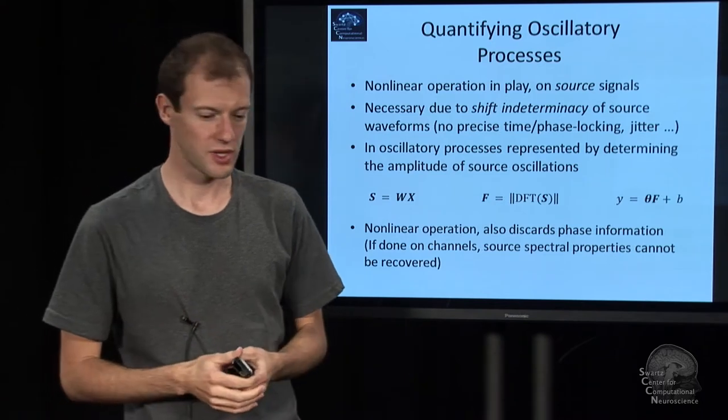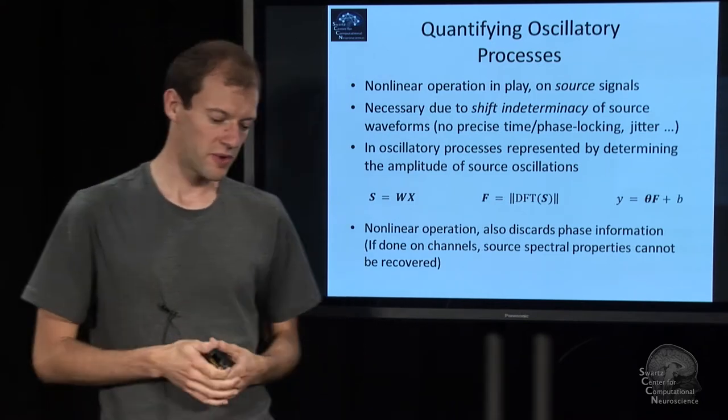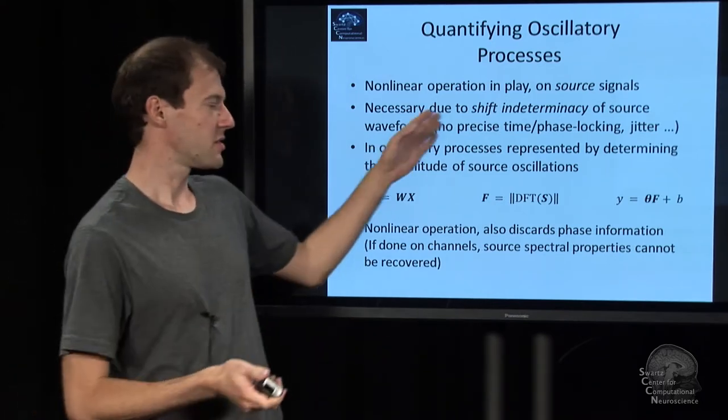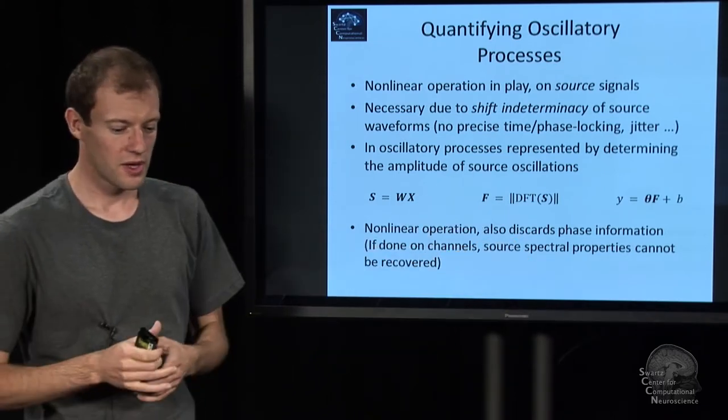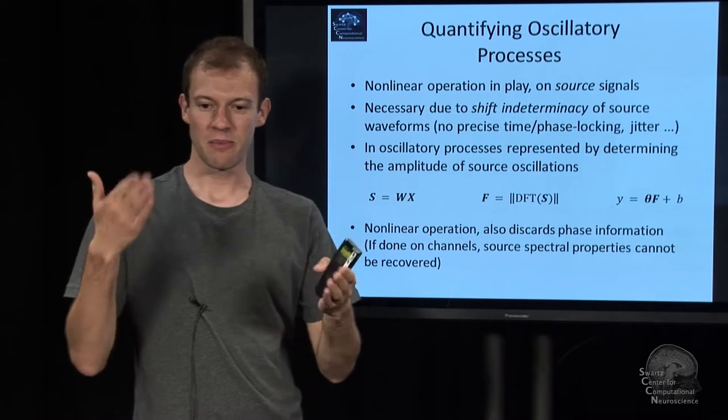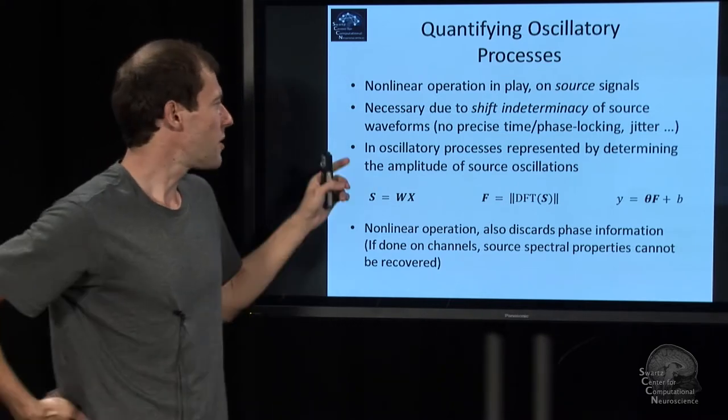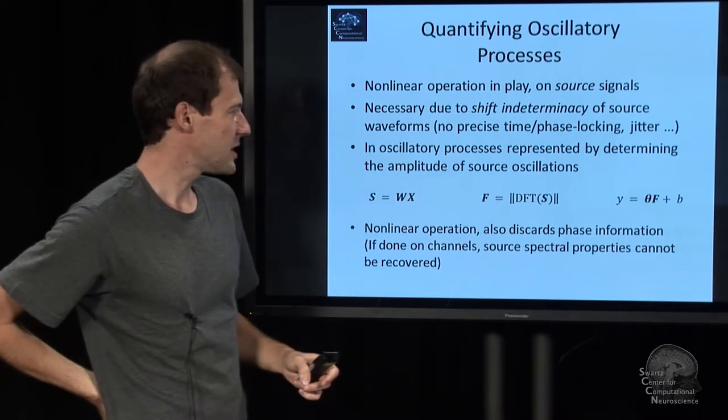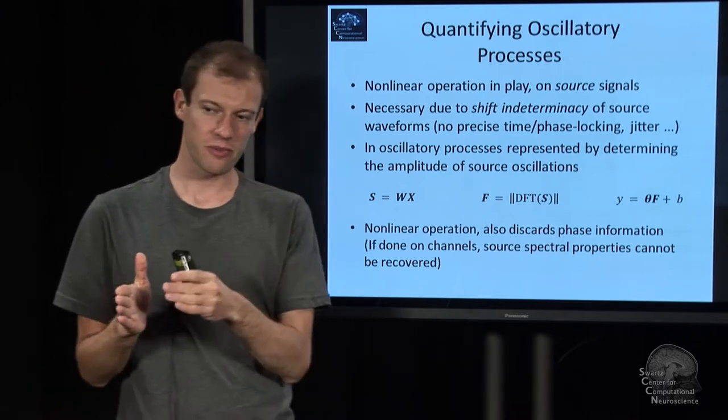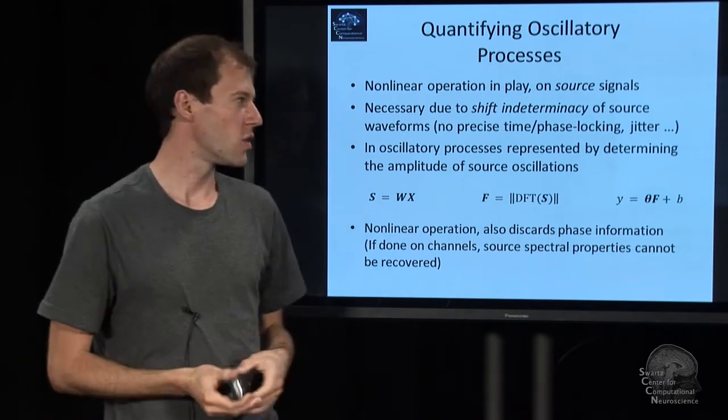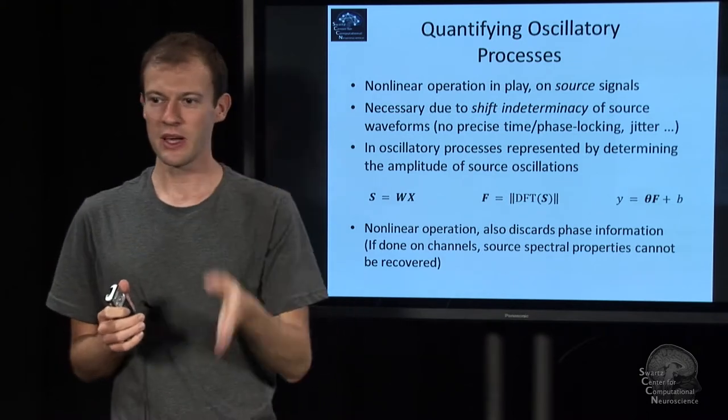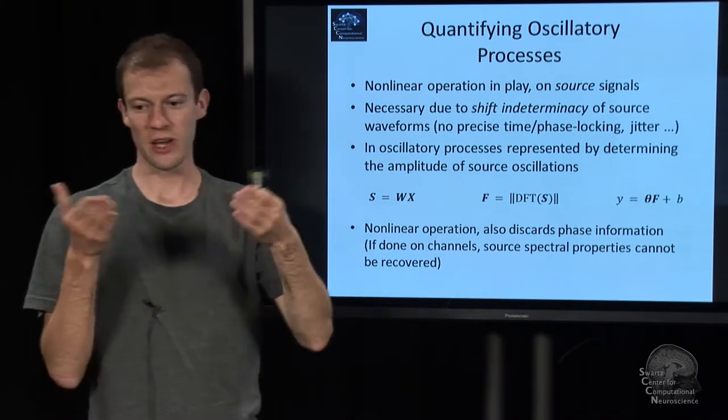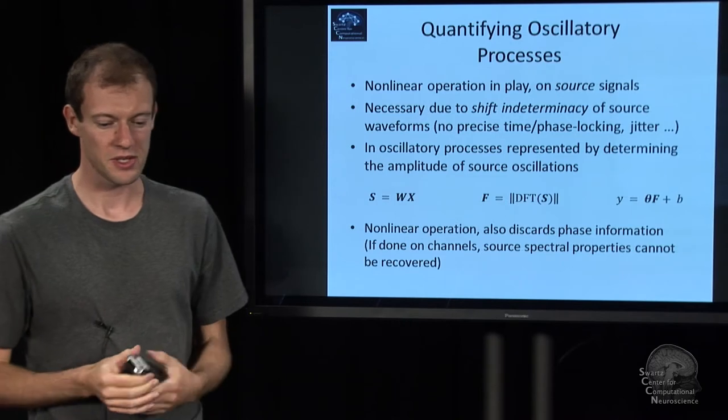If you were to use an entirely linear method, you would basically be in the ERP business, event related potentials, which find some, if you say there's an oscillation, maybe some kind of a high frequency wiggle. And you're trying to linearly map this onto the output.